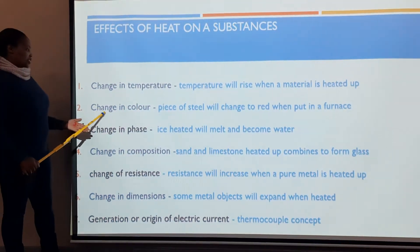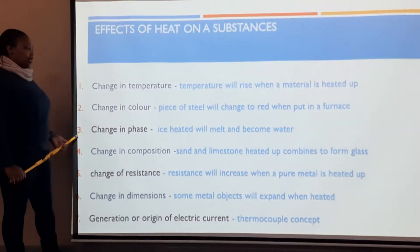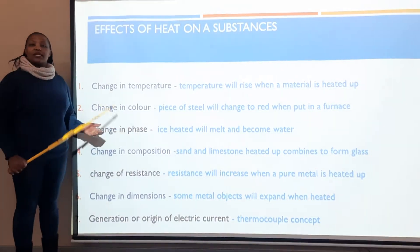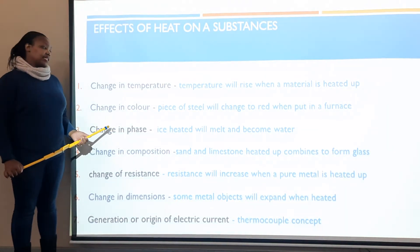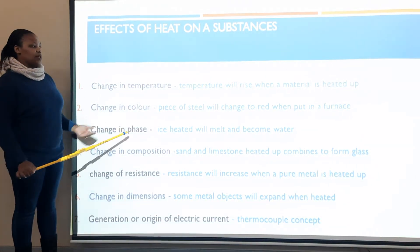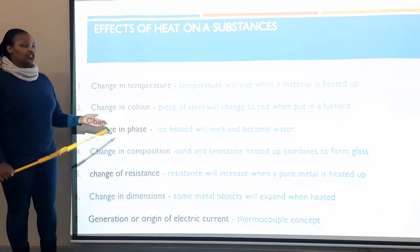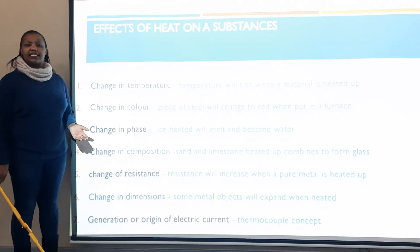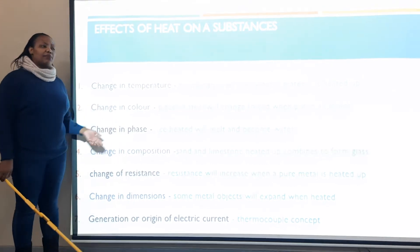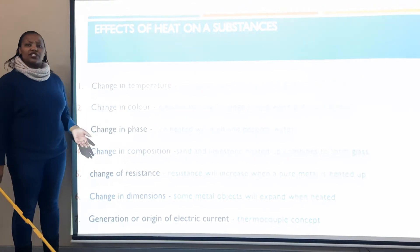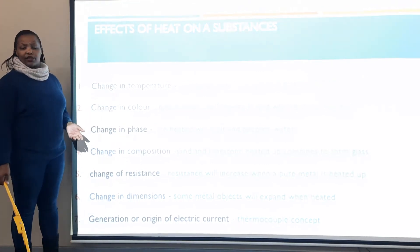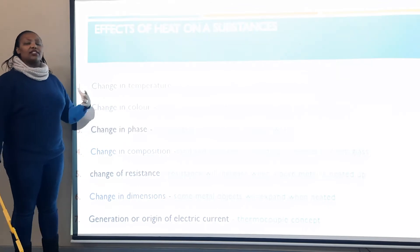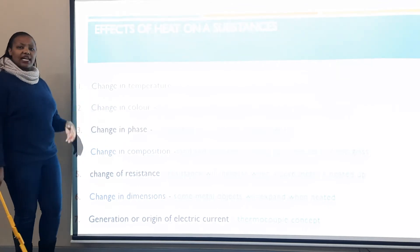The second one, change in color. Some substances will change in color when they are heated. For instance, a piece of steel will change to red when you put it in a furnace. And paper also changes in color when you heat it up — when you burn it, while it's burning, it looks red.